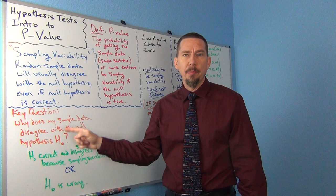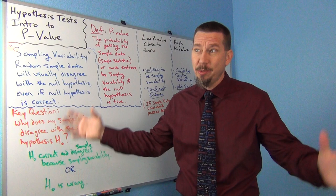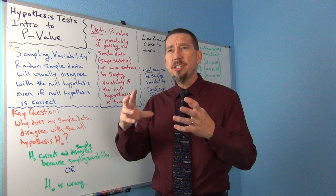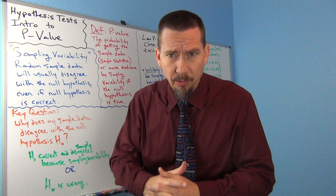P-value is a number we can calculate that helps us deal with sampling variability. Here's the key question that drives the p-value: Why does my sample data disagree with the null hypothesis? We said in the principle of sampling variability that the sample data is going to disagree with the null hypothesis whether the null hypothesis is right or wrong. So the question is not does it disagree — the question is why does it disagree.